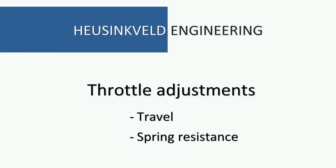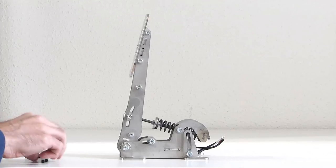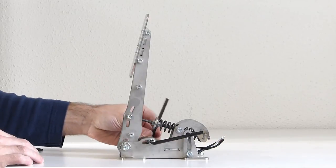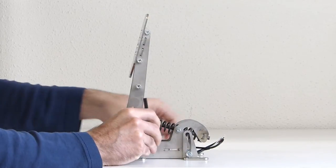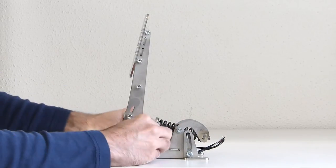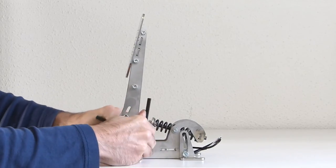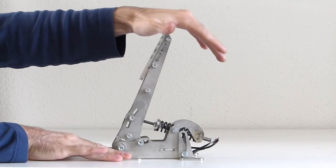The throttle, you can adjust the travel and the spring resistance. First we'll do the travel. For that you need the two largest Allen keys again. And you see which ones you have to undo, just a turn or two. Then you can slide it forward and back. In the forward position, as you can see here, I tighten it up. Gives you the least travel, as you can see it's pretty short.